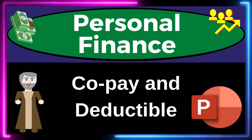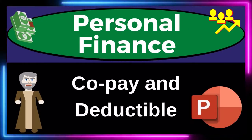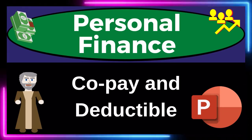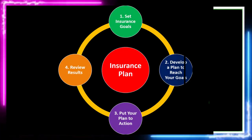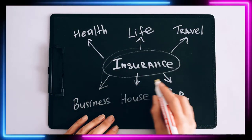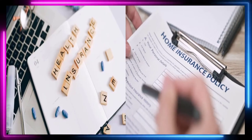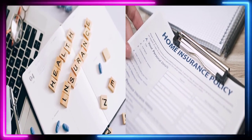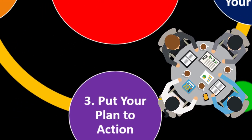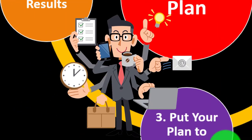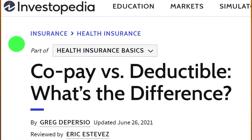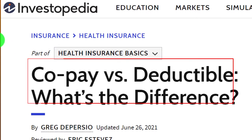Personal Finance PowerPoint Presentation: Co-pay and Deductible. Prepare to get financially fit by practicing personal finance. Insurance is part of our long-term risk management strategy where we use the adage of measure twice, cut once — putting a formal plan in place which might include setting our insurance goals, developing a plan to reach them, putting those plans in action, reviewing the result, and repeating the process periodically. We're now looking at co-pays and deductibles.